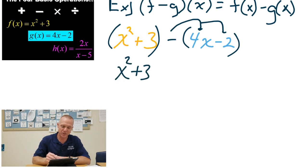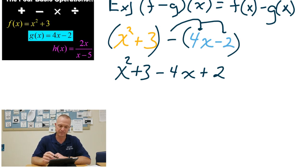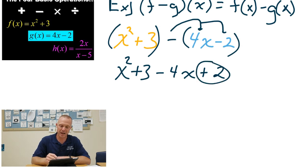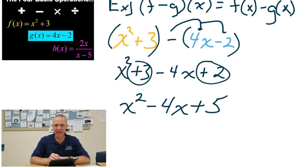You're going to distribute that subtraction sign, and of course you get the opposite of each term. So now I have x squared plus 3 minus 4x plus 2. You want to combine like terms — I only have two like terms I can combine, namely the plus 3 and the plus 2. The other terms, x squared and minus 4x, don't change. But now I end up with a plus 5. And that's my subtraction answer.